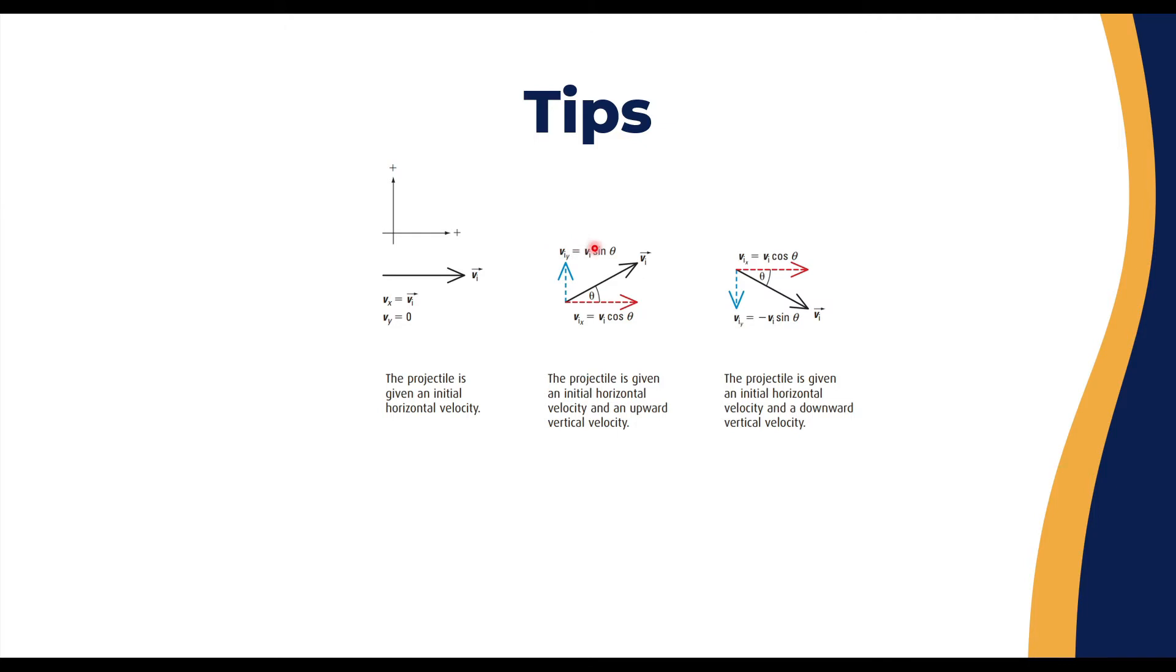Now sometimes, and many times in projectiles, the velocity is going downwards with an angle. So again, you need to decide where your angle is—that's your angle next to the x-axis, θ. v_ix equals v_i cos θ to the positive side, and v_iy equals minus v_i sin θ because the initial velocity on the y-axis is going downward, which is negative.